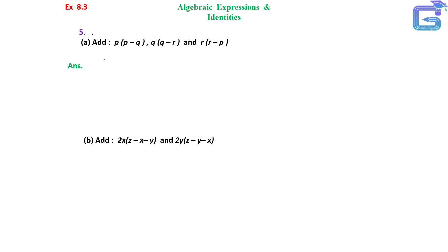Question number 5, part A: add P bracket P minus Q, Q bracket Q minus R, and R bracket R minus P.